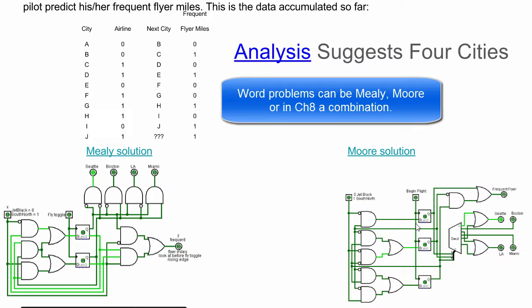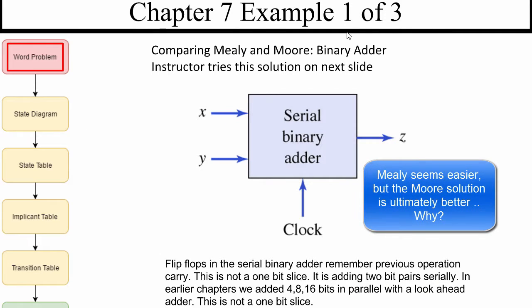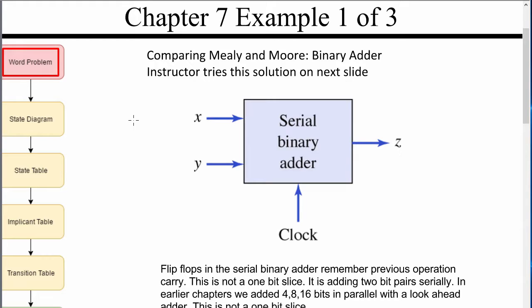So the actual word problem up here can favor either the Moore or the Mealy — it's interesting. Next, what we're going to do are three examples where we're going to start with the word problem and work down to the state table, doing both the Mealy and Moore style. So let's try to draw a Mealy circuit for this serial binary adder.